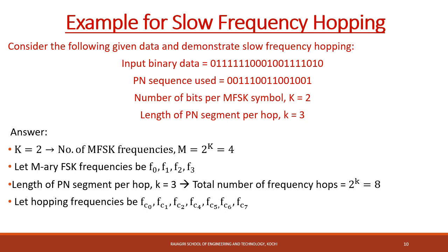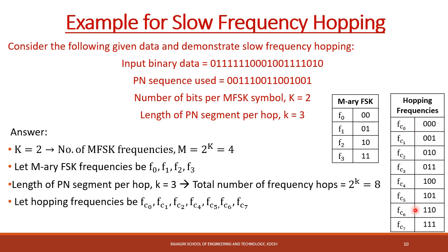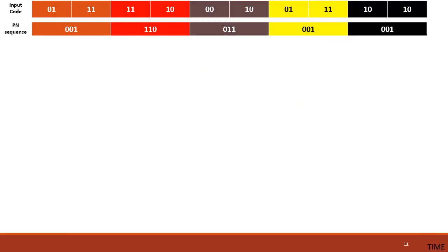Before going into the details of slow frequency hopping, let's explain it with an example. We have an input binary data of zeros and ones, and we use a PN sequence of length 15 to determine the hopping frequency. In MFSK, we are taking 2 bits per MFSK symbol, giving 4 symbols (2^2). The 4 frequencies assigned for MFSK are F0, F1, F2, and F3. We take 3 bits of the PN sequence to select the hopping frequency, giving 8 possible frequencies Fc0 through Fc7, corresponding to 3-bit combinations 000 to 111.